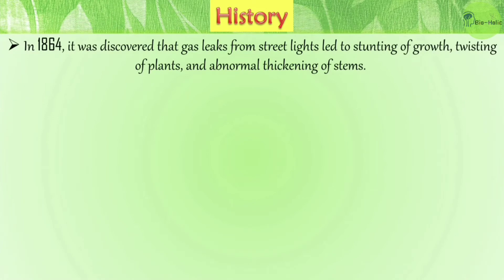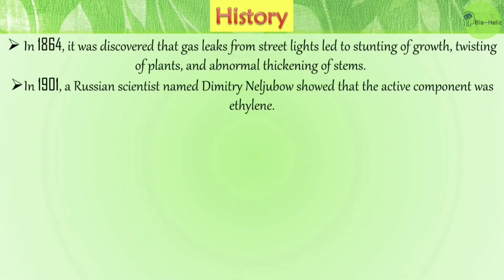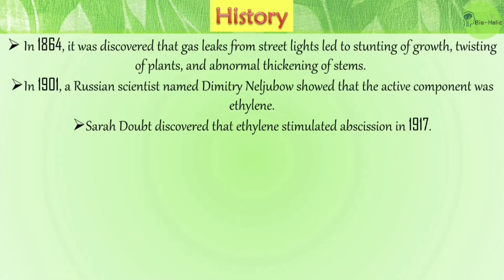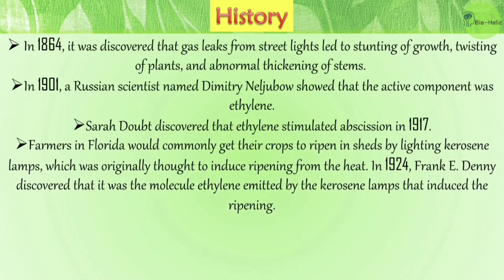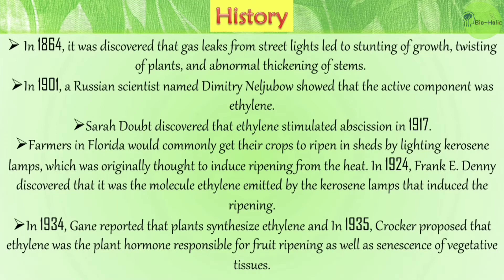In 1864, it was discovered that gas leaks from street lights led to stunting of growth, twisting of plants, and abnormal thickening of stems. In 1901, a Russian scientist named Dimitri Neljubow showed that the active component was ethylene. In 1917, ethylene was found to stimulate abscission. Interestingly, farmers in Florida used to ripen crops in sheds by lighting kerosene lamps — originally thought to induce ripening from heat, but in 1924, Frank E. Denny discovered it was ethylene emitted by the lamps. In 1934, Gane reported that plants synthesize ethylene, and in 1935, Crocker proposed ethylene was the plant hormone responsible for fruit ripening and senescence of vegetative tissues.